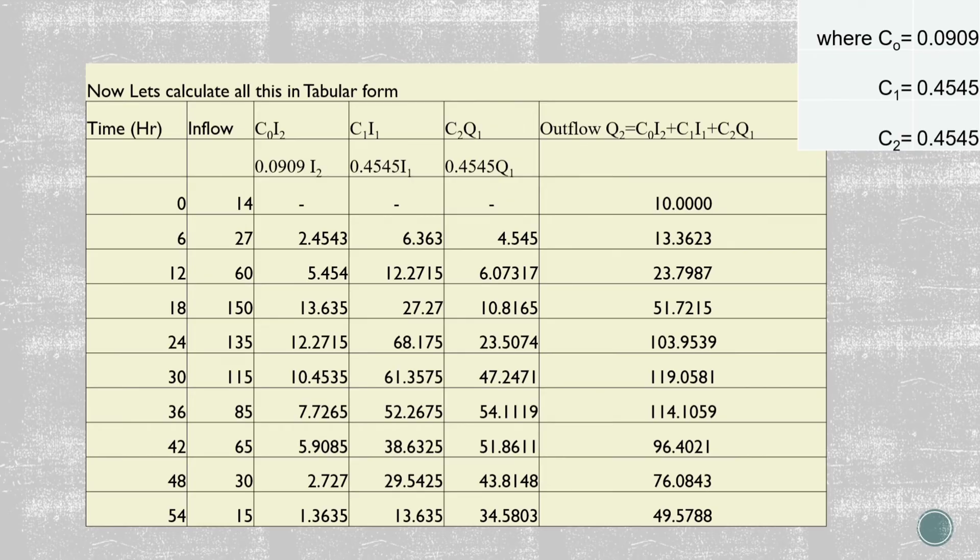Similarly, for C1*I1, we have already calculated the value of C1 as 0.4545, and I1 should be 14. On multiplying C1 and I1, we will get the value of 6.363.